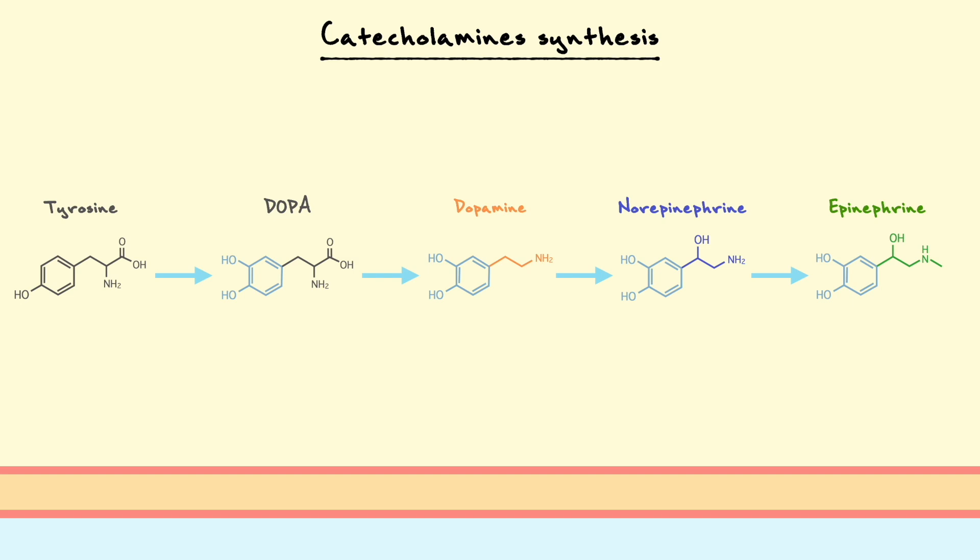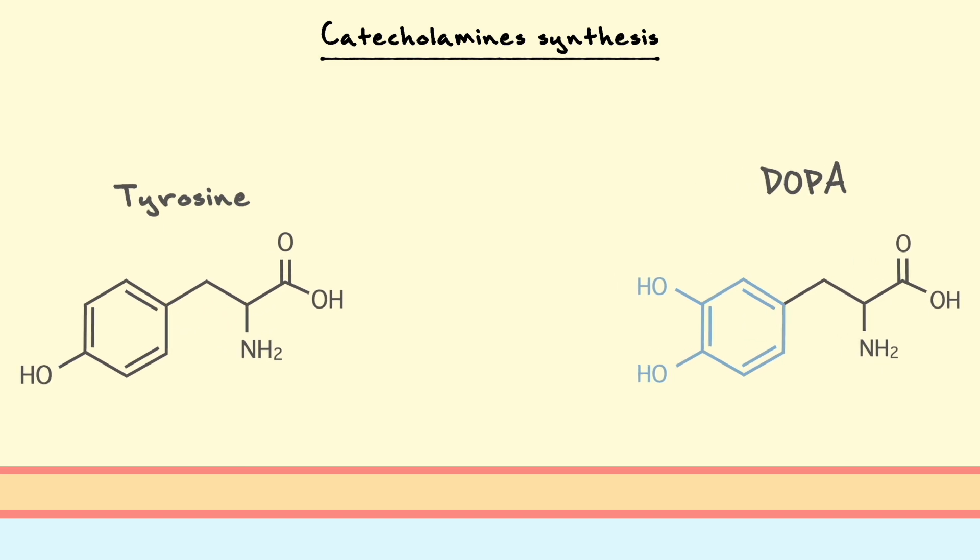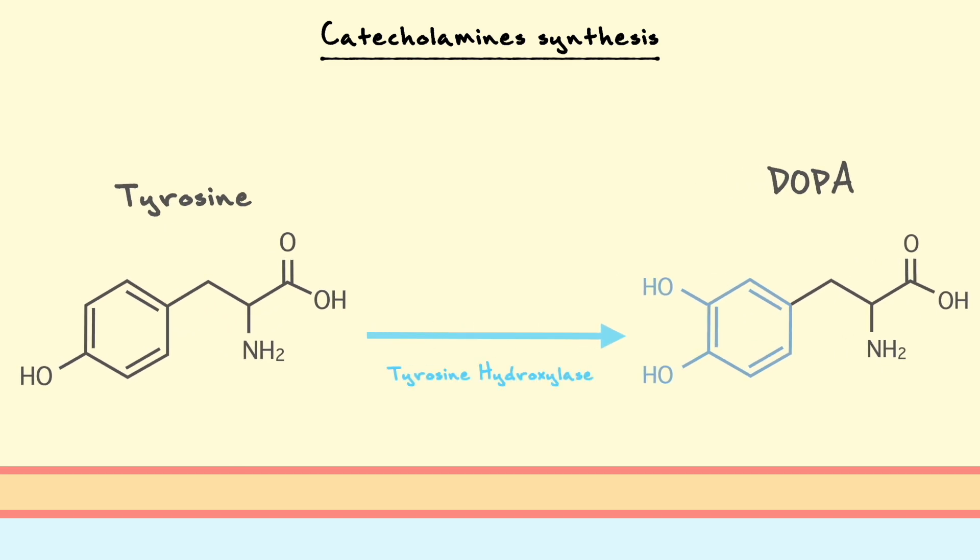To get the synthesis going, the first step of the pathway is catalyzed by the enzyme tyrosine hydroxylase, which converts tyrosine to a compound named DOPA. To do so, tyrosine hydroxylase hydrates, or in other words, adds a hydroxyl group here in green on the benzene ring to form the catechol moiety. This reaction requires oxygen, as well as a compound called tetrahydrobiopterin, which will be the source of hydrogens for the hydroxyl group.